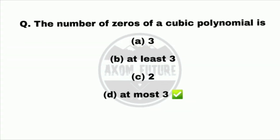Question 3. The number of zeros of a cubic polynomial is? The right answer is D, at most 3.